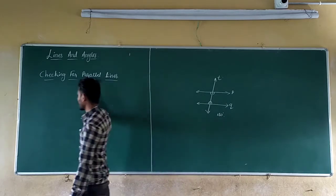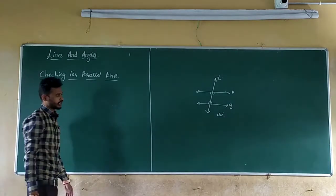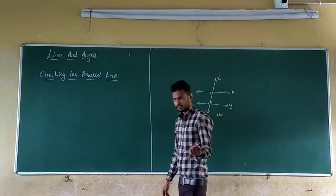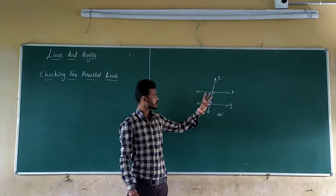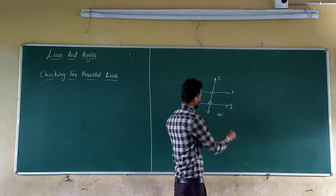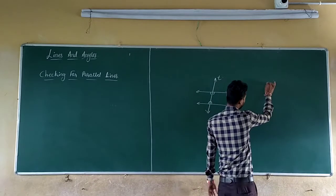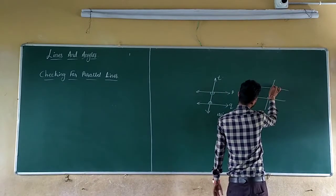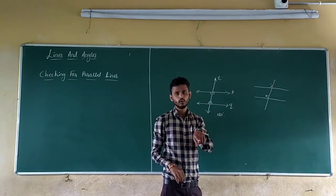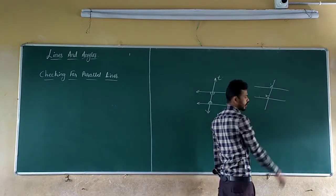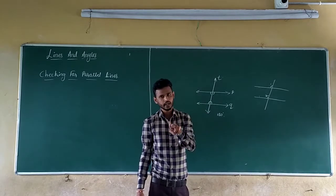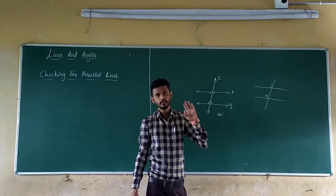Now, checking for parallel lines. How do we check whether two lines are parallel or not? This is the vice versa of the three things you studied in the previous class. If corresponding angles are equal, then the two lines will become parallel — that is the vice versa. If two lines are parallel, corresponding angles are equal; if corresponding angles are equal, then the two lines are parallel.